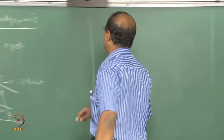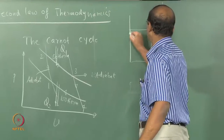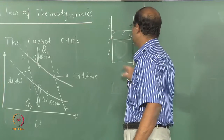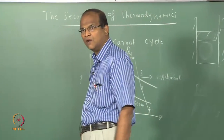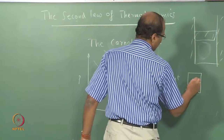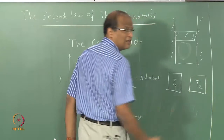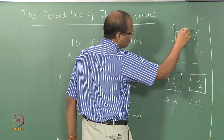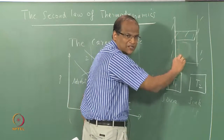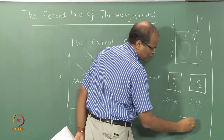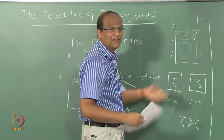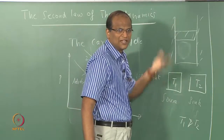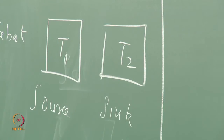There is a piston and cylinder with a medium inside, insulated everywhere except the bottom which is allowed to exchange heat. There are two reservoirs T1 and T2 — T1 is the source. You make the piston go from one position to another so it is compressed, then put it in contact with T1, then there is heat addition, it heats up and expands doing work, it goes back to position 3, then comes back and the cycle repeats. This is basically the cycle.